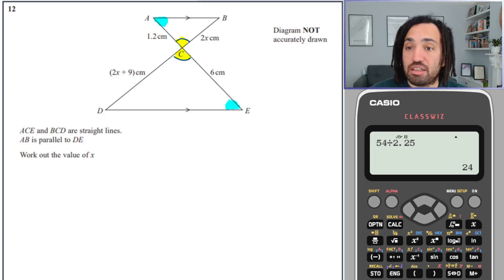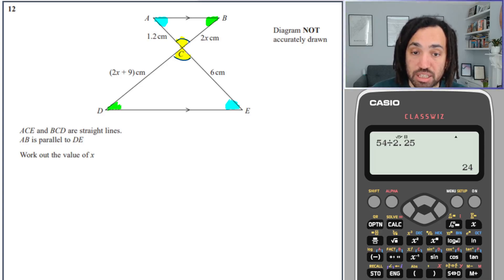And then finally, just by the fact that angles add up to 180 and they're both triangles, these two will also be the same as one another, so let's label them green.